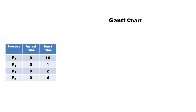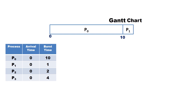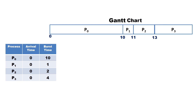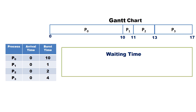Let us draw the Gantt chart to illustrate the schedule. P0 starts at time 0 and finishes at time 10. P1 starts at time 10 and finishes at 11. P2 starts at 11 and finishes at 13. P3 starts at 13 and finishes at 17 milliseconds.